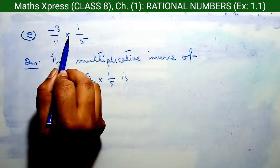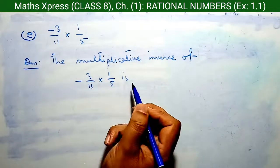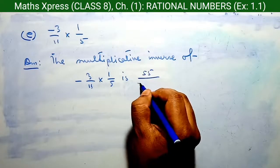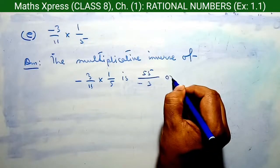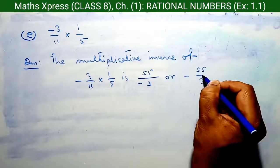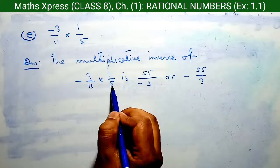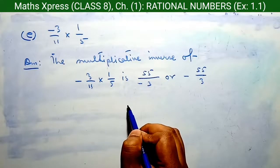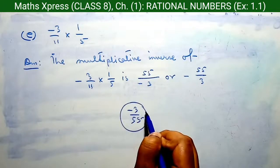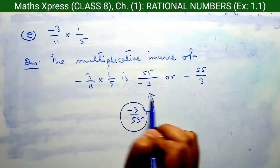Question E: minus 3 by 11 into 1 by 5. We multiply numerator with numerator and denominator with denominator. This gives the fraction minus 3 by 55. Then we write its multiplicative inverse, which is 55 by minus 3, or minus 55 by 3.